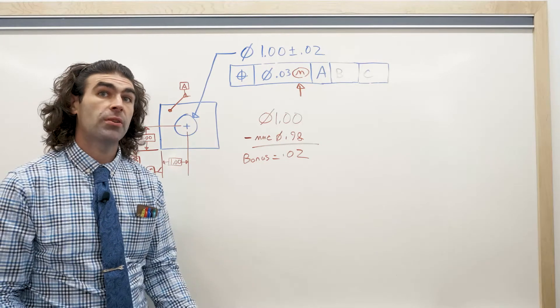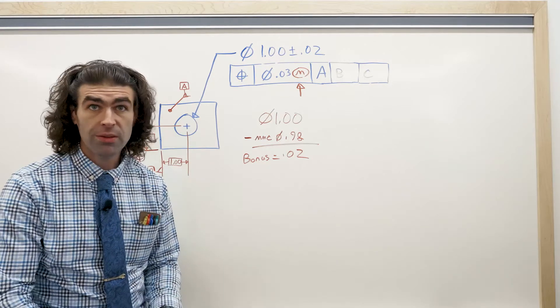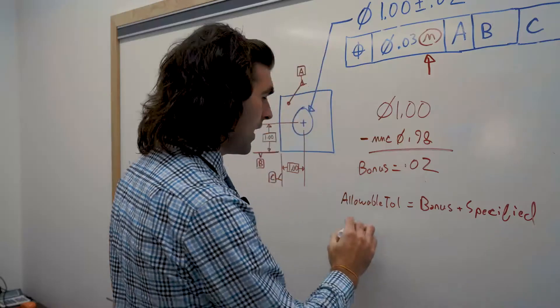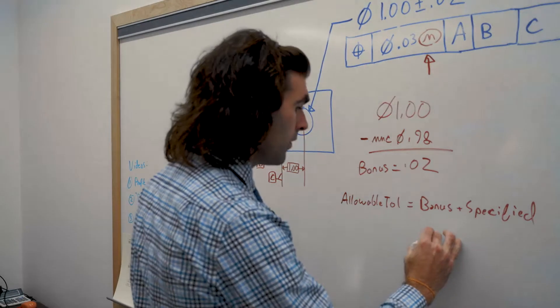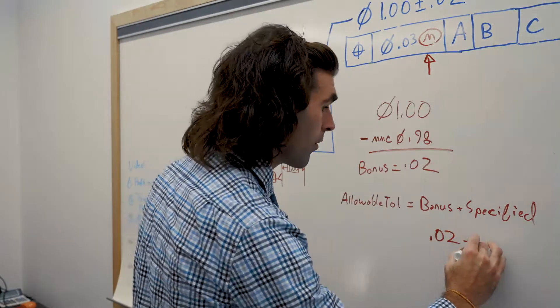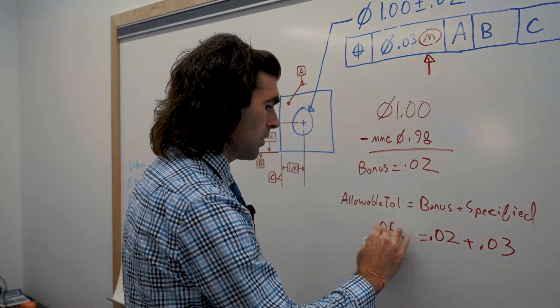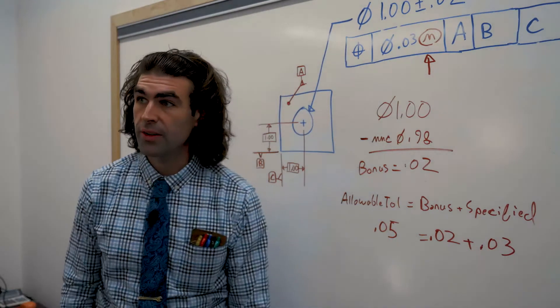Now, the allowable tolerance is just the bonus plus what's already specified. So, in this case, the bonus we've established is 20 thousandths plus what's already up here, 50 thousandths, right?